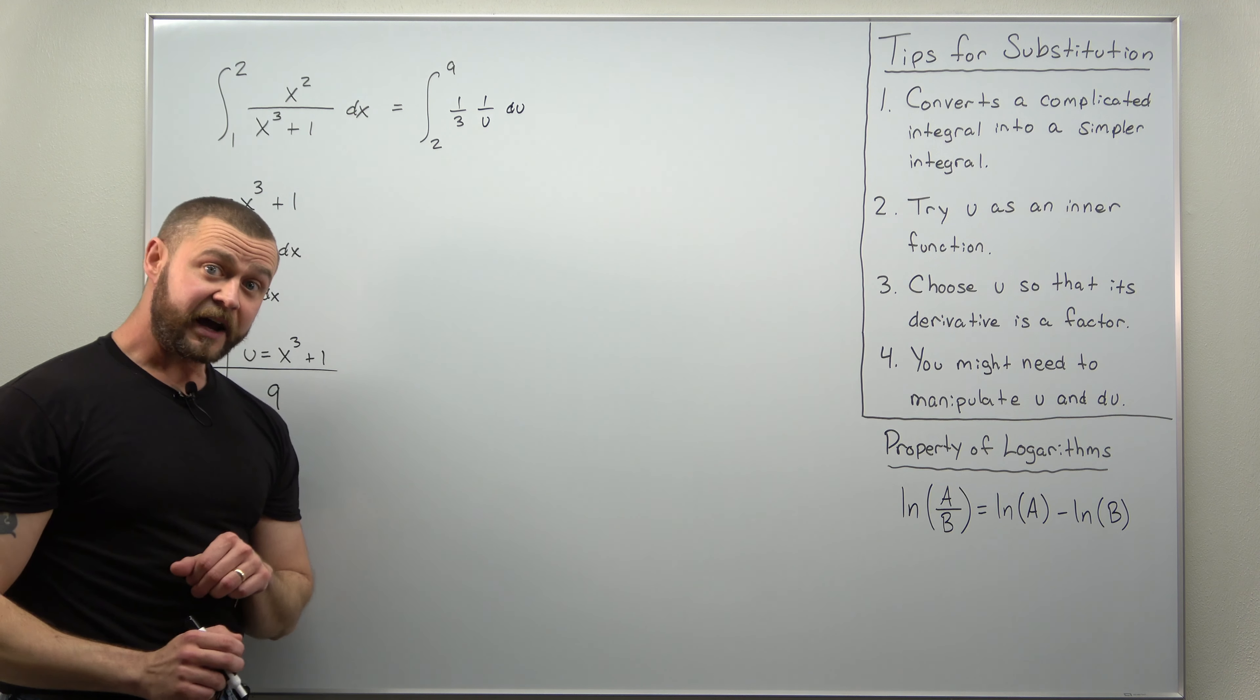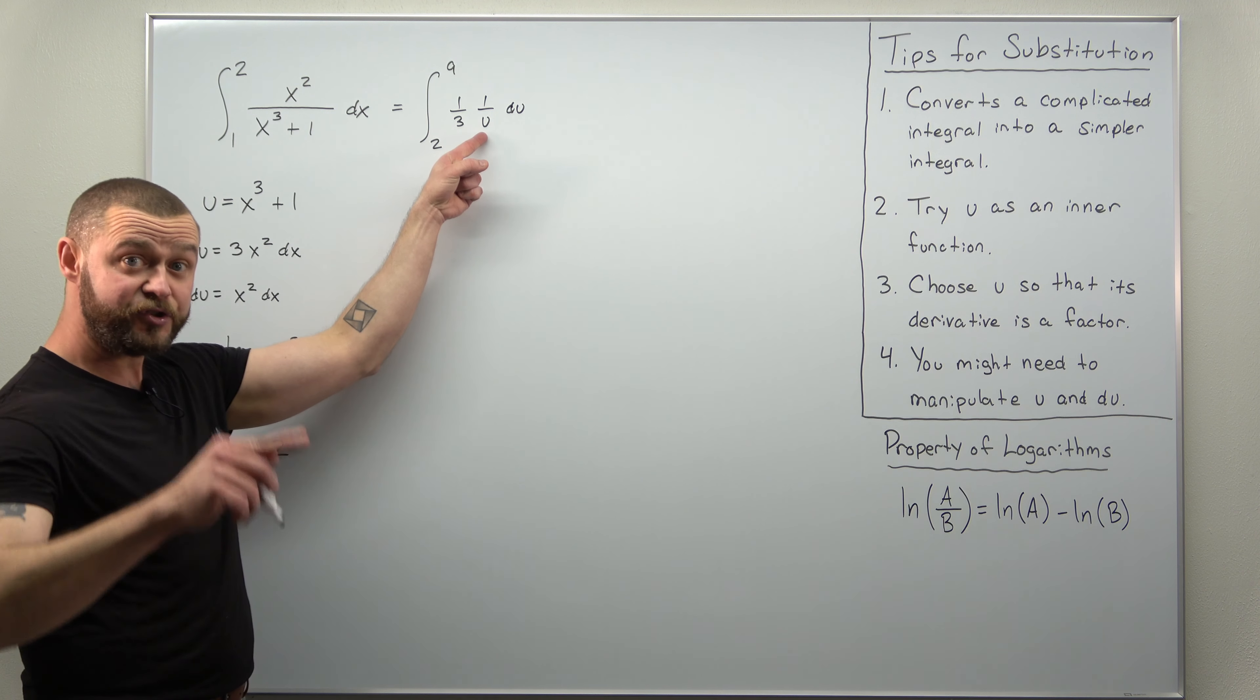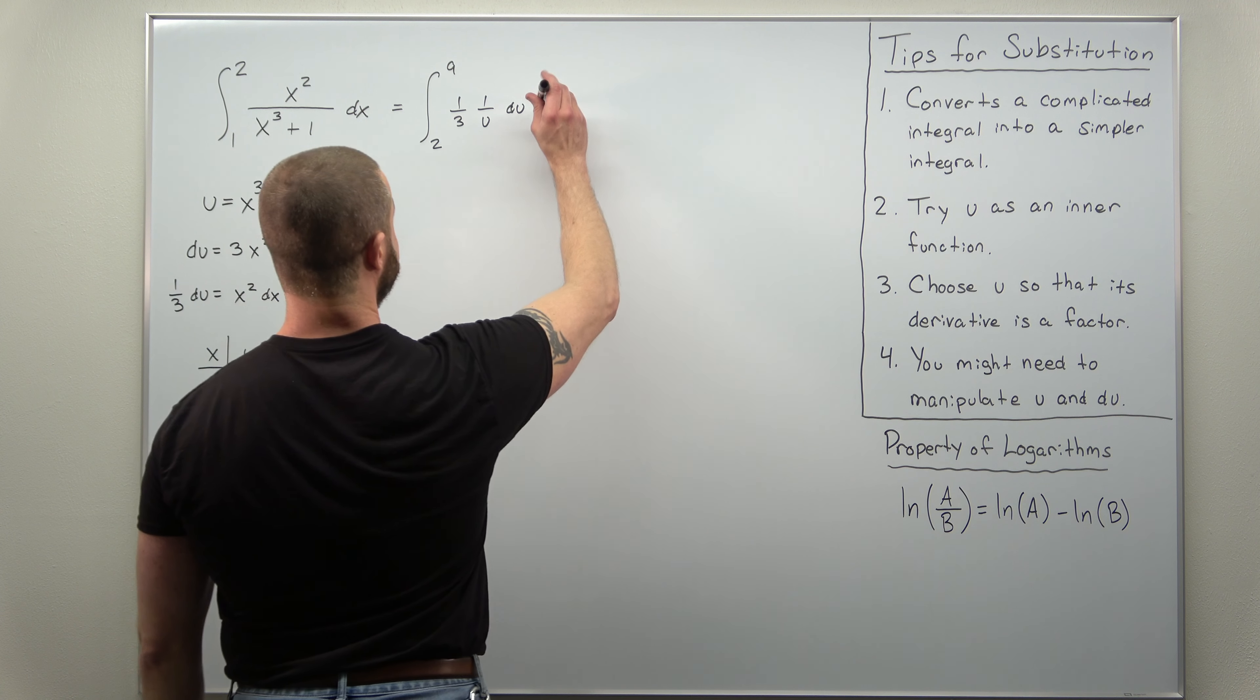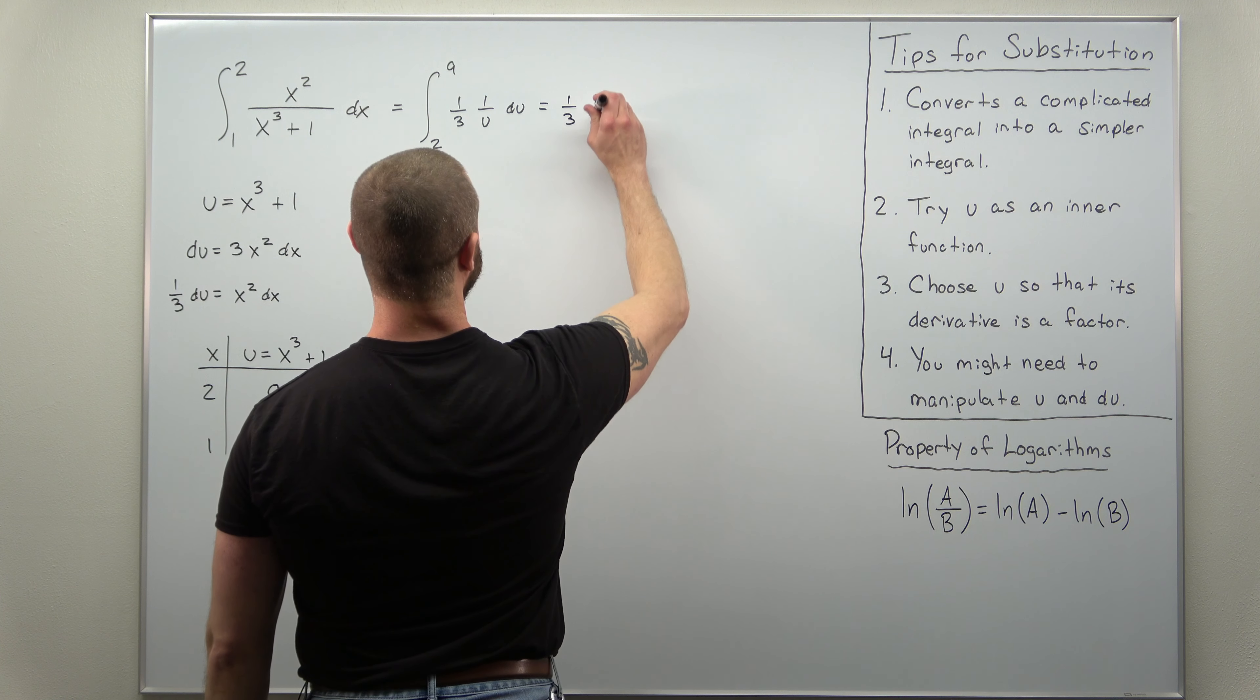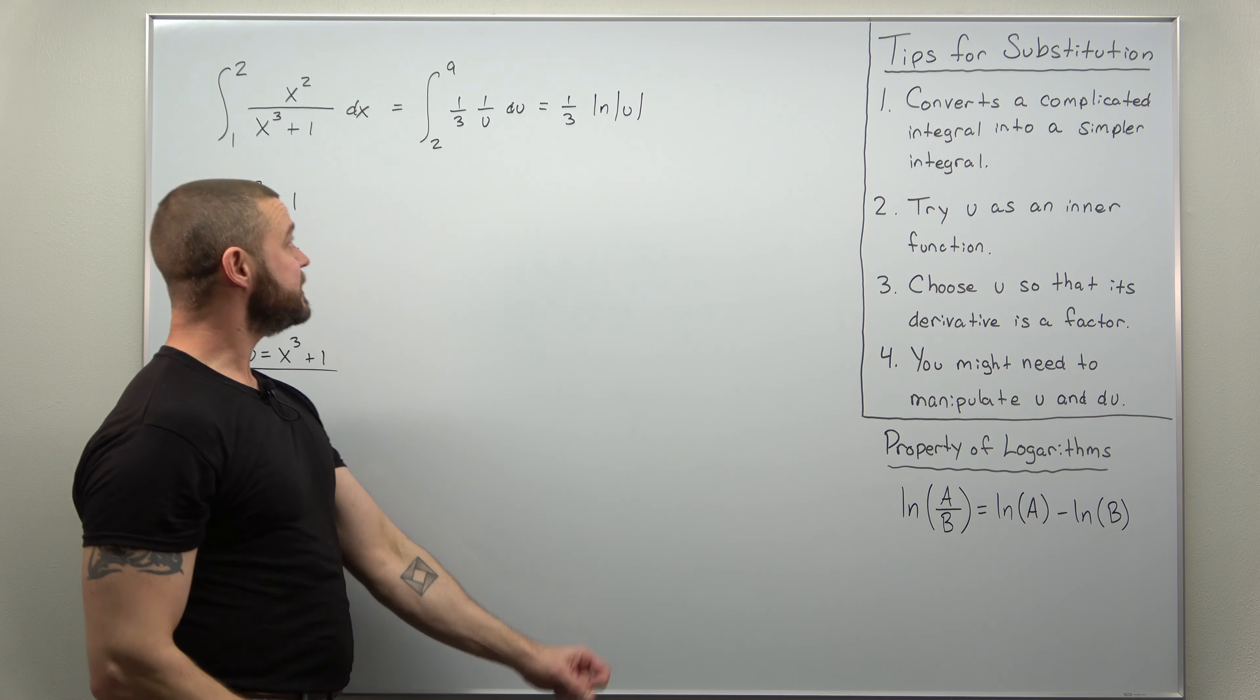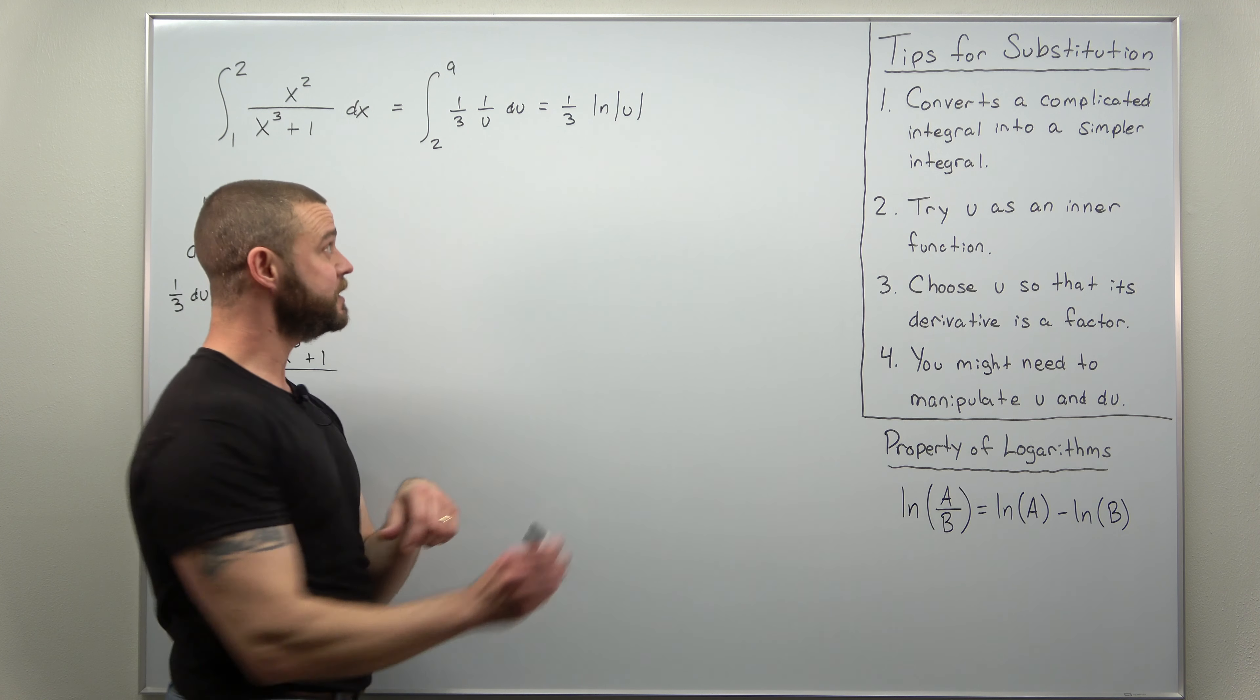Alright and this antiderivative, we can't apply the power rule since that can be written as u to the negative 1, but the antiderivative is just a simple natural log. So we get this coming out to 1 third the constant multiple times natural log of absolute value of u. And now we just evaluate that at our new u limits 2 to 9.